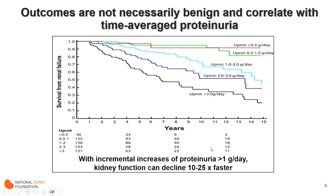Data from Toronto shows that patients with less than 300 milligrams of proteinuria a day — the red line — have pretty good 15-year outcomes, with only about 5% reaching end-stage renal disease. But as proteinuria increases to one gram, two grams, or more than three grams per day, there is a progressive decline in good outcomes. Kidney function can decline in patients with increased proteinuria by more than 10 to 25 times faster than those with less than 300 milligrams of proteinuria a day.